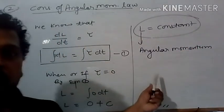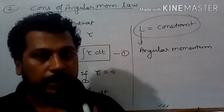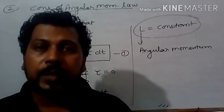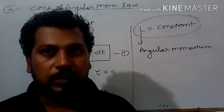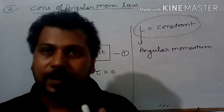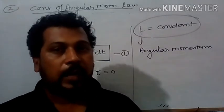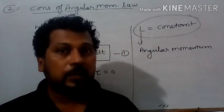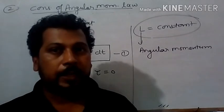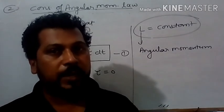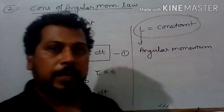L is called angular momentum. So we can say that angular momentum of any rotating body will be conserved if there doesn't act any external torque. Angular momentum will be conserved.